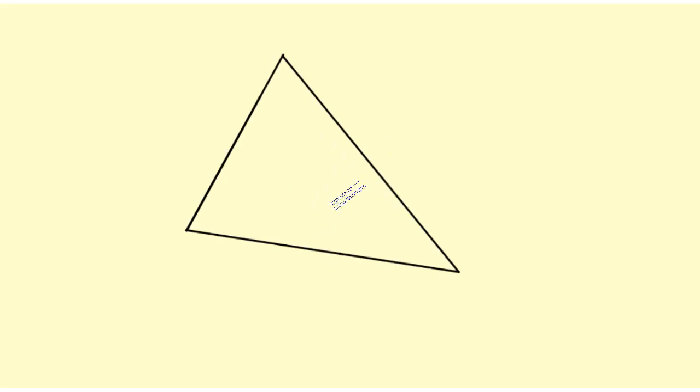In order to construct the median from this vertex to this side, I'm going to need to know the midpoint of this side. And the only way that I can find that is by constructing the perpendicular bisector.